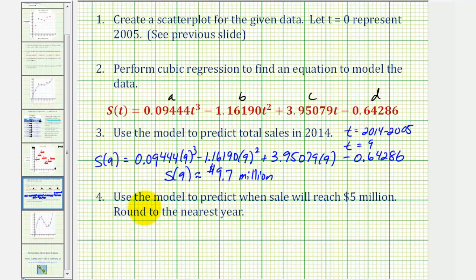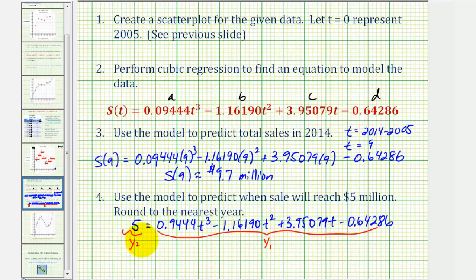Now this next question is a little trickier. We want to use the model to predict when the sales will reach five million dollars, we're asked to round to the nearest year. So now they're giving us the total sales amount, and we actually want to solve for t. So we want to solve the equation five equals the right side of our cubic function. This would obviously be a very difficult equation to solve by hand, so we're going to solve it graphically. Since we already have this function in y one, we're going to enter the left side into y two, and determine the t value when these two intersect.